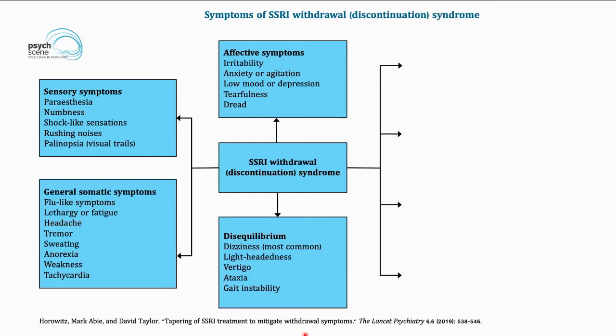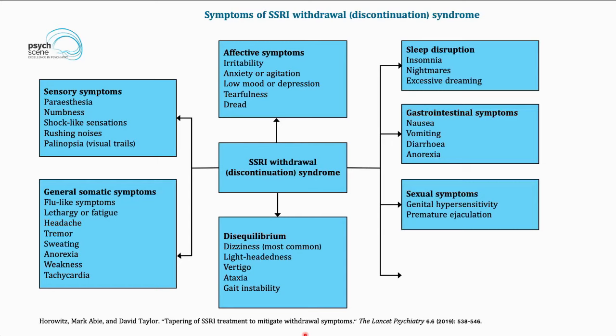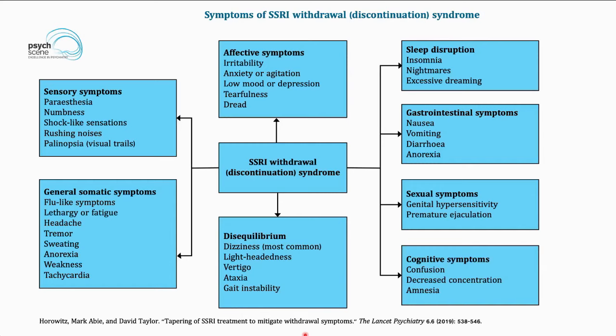Symptoms of disequilibrium include dizziness, lightheadedness, vertigo, ataxia, and gait instability. Sleep disruption includes insomnia, nightmares, and excessive dreaming. Gastrointestinal symptoms include nausea, vomiting, diarrhea, and anorexia. Sexual symptoms can include premature ejaculation or genital hypersensitivity. Cognitive symptoms include decreased concentration, amnesia, or confusion.